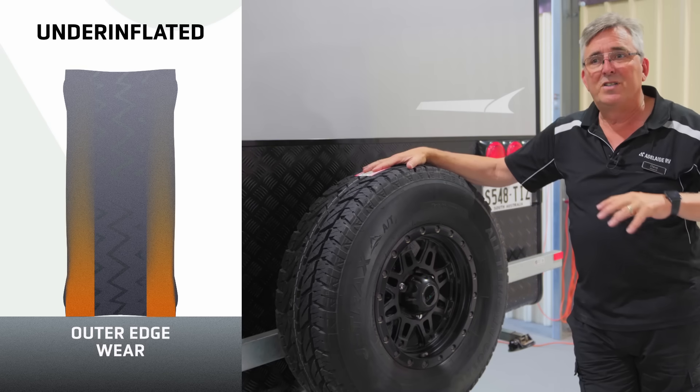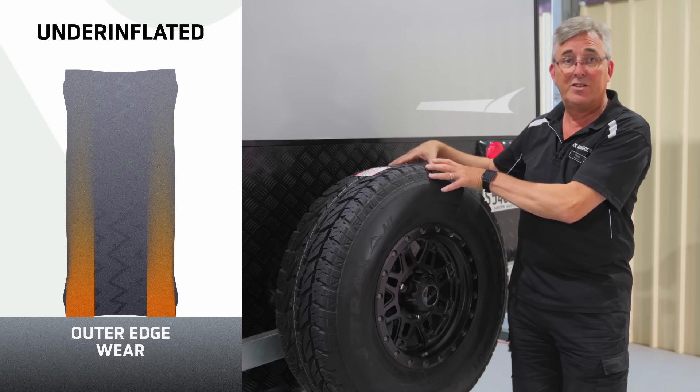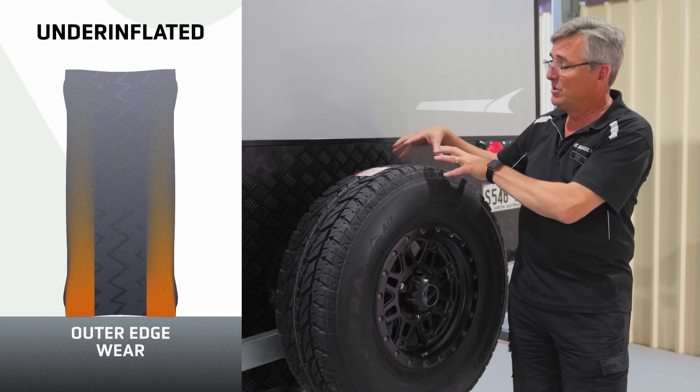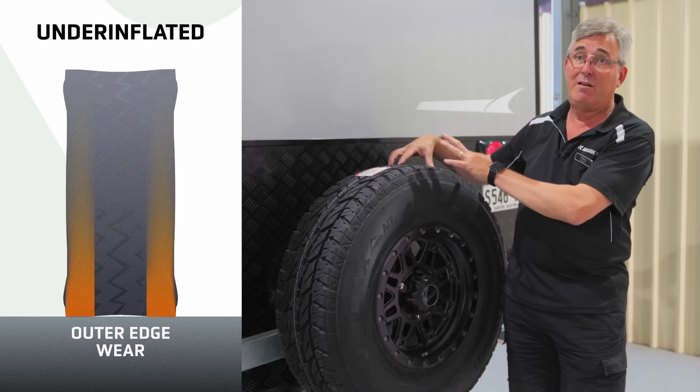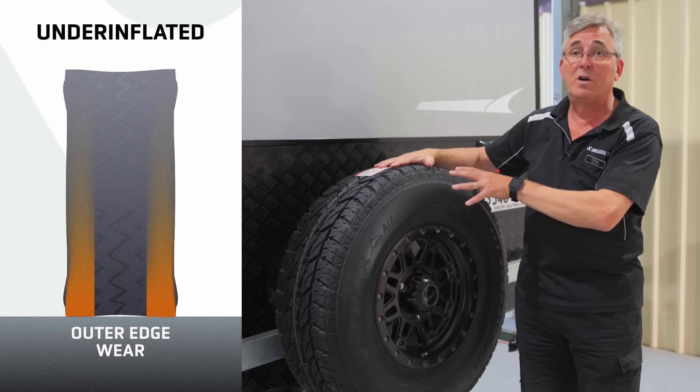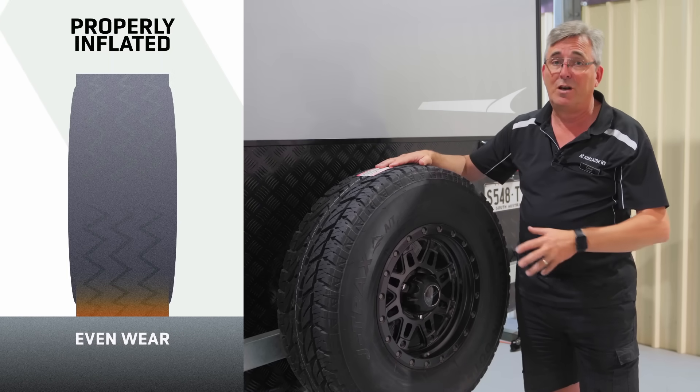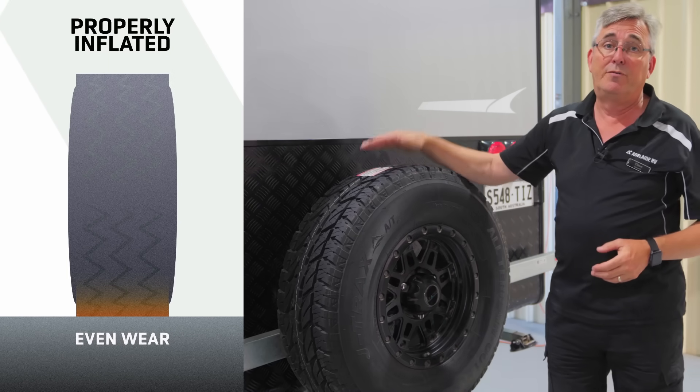If your tyre is under-inflated and you're on the bitumen road, because you've got a bigger footprint on the ground, your tyre's going to get hotter. So there's a cheats way of checking after about an hour of drive, getting your tyre gauge out, and you'll know if you're getting too much footprint on the bitumen. So get it right and your van will feel like it's towing much better and you'll get better fuel economy.